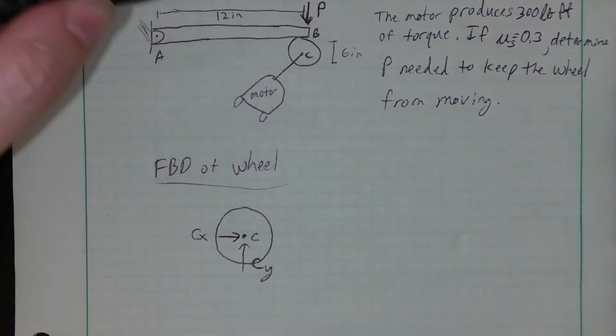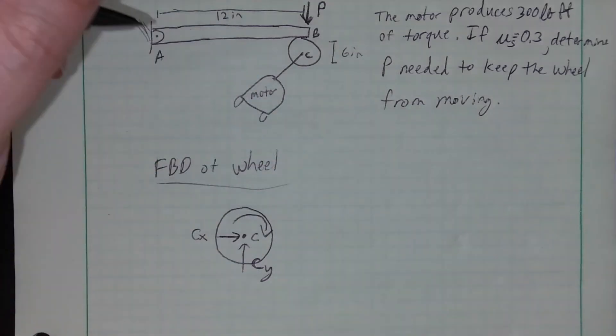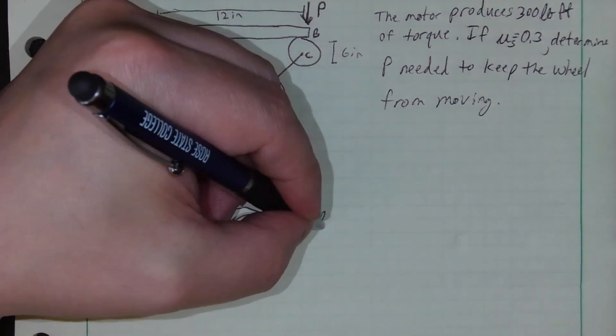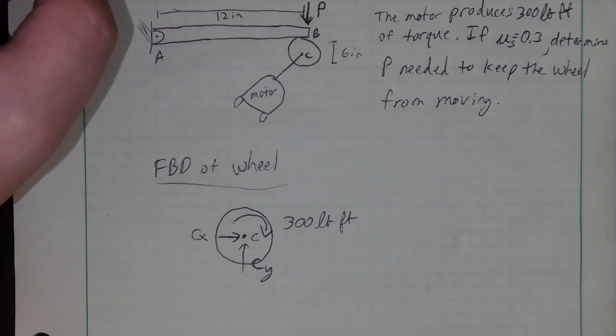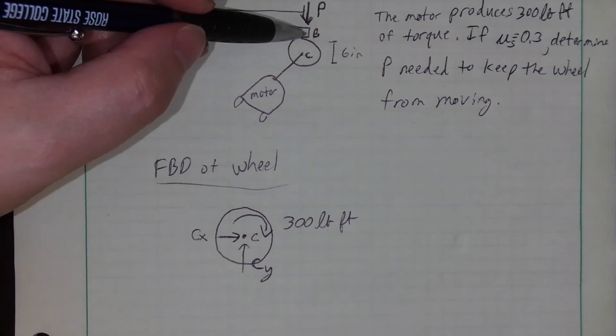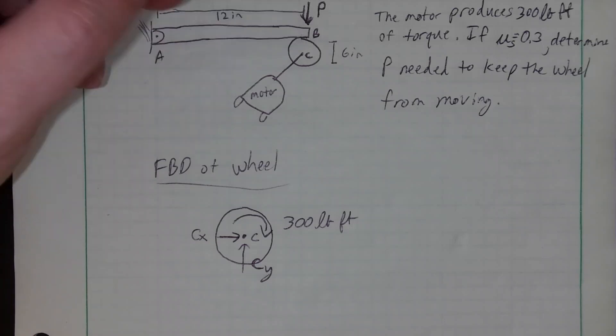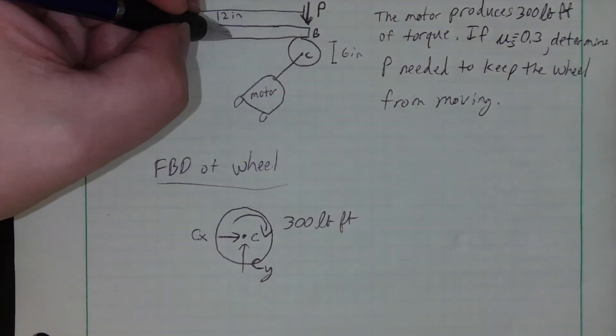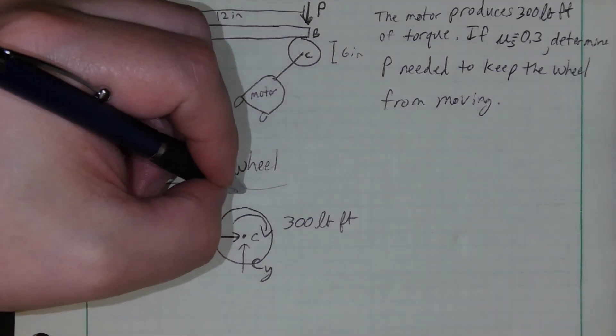I've removed the motor, just looking at this point C. We're going to pretend that it's attached with just a simple pin. When I do that, that means I'm going to have a CX and a CY. And then the motor we said is producing a certain amount of torque on this wheel that's going to be equal to 300 pound-feet or foot-pounds, it's given in the problem statement. So that's what the motor's imparting on this wheel.